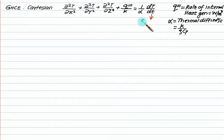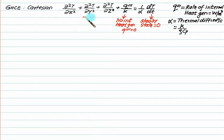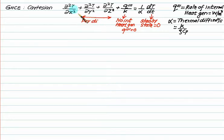If ∂T/∂t = 0, it is called steady-state heat transfer. If there is no internal generation, set q''' = 0. If heat transfer is one-dimensional, then ∂²T/∂y² and ∂²T/∂z² are individually equal to zero. Any of these terms can be applied depending on the definition of the problem.